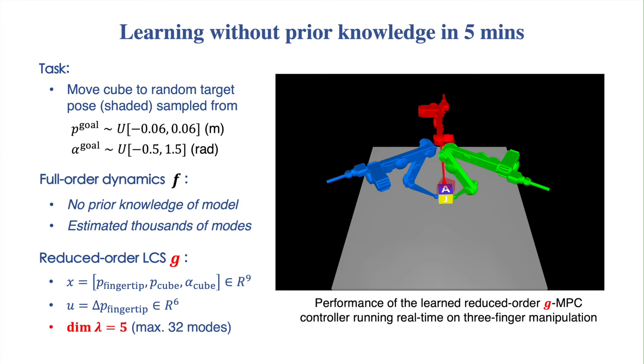The second task is cube moving. The goal is to move the cube to any random pose. With no prior knowledge, our method learns a task-driven reduced-order LCS to solve the task with less than 5 minutes of real data. The video here is the real-time running of the learned reduced-order MPC controller on the system.